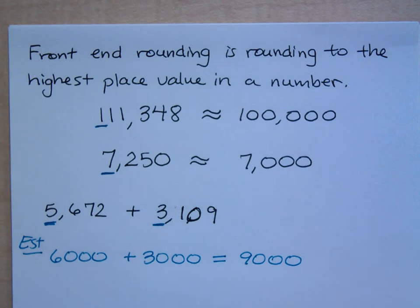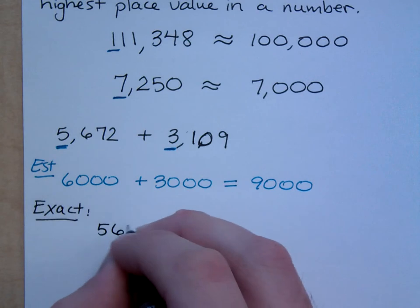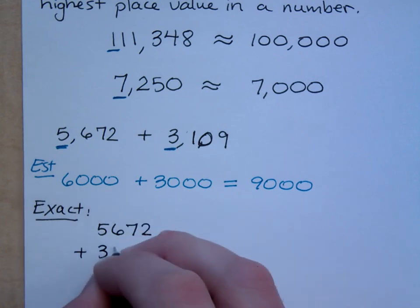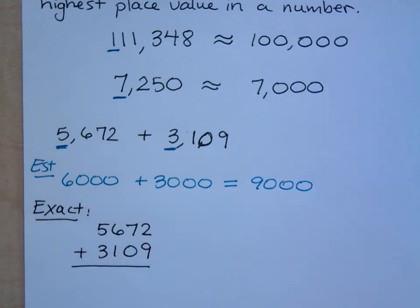Let's talk about what the actual answer would be. What is the exact answer? Because I don't want an estimation unless I ask you for one. So the exact answer would be taking 5,672 plus 3,109. I expect my answer to be around 9,000. So if you come up with an answer that's, say, 20,000, you're wrong, right? You know this makes sense. So when I add this, what do I have? So 11 carry the 1, that's 8, 7, 8. So this is my actual answer.